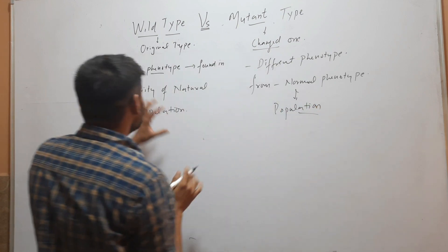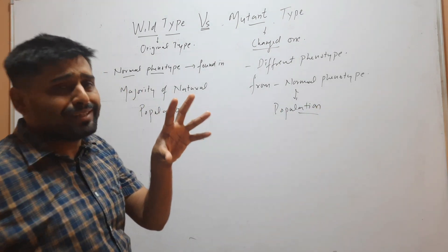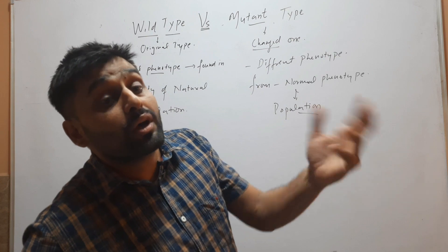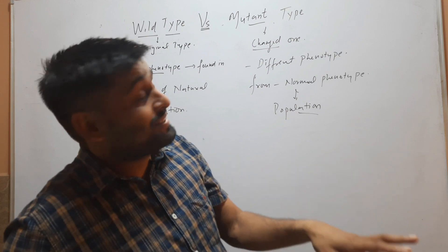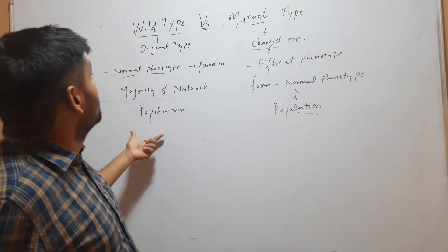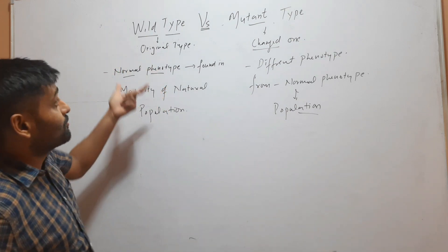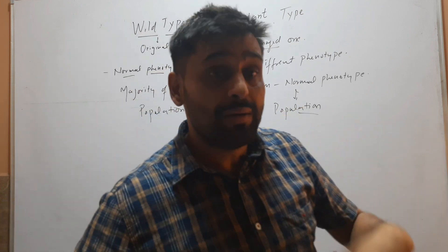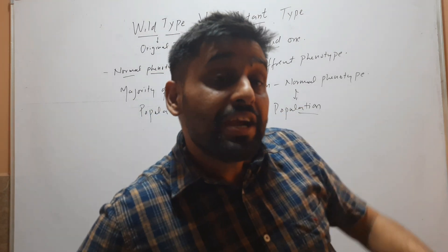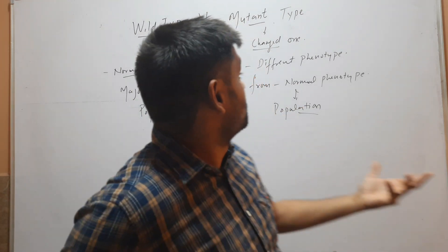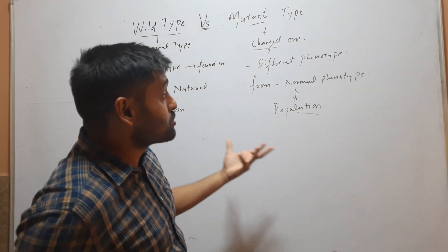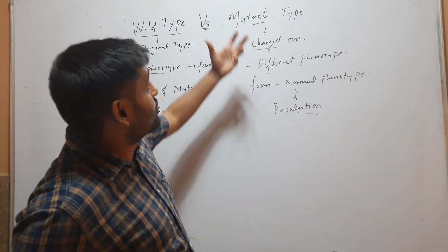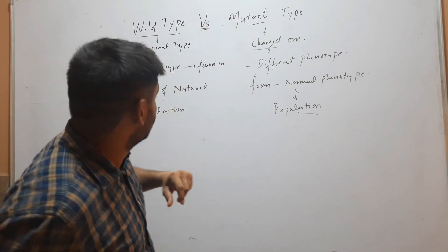When a normal phenotype is present in the majority of organisms of a population, that is called the wild type. But sometimes a different phenotype is also found that is different from the normal phenotype. That is called the mutant type.